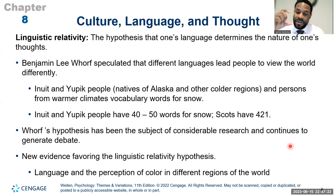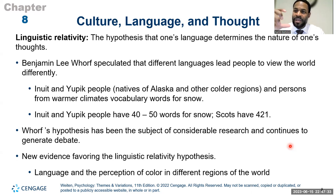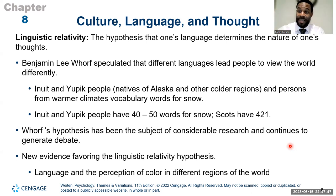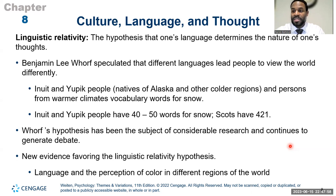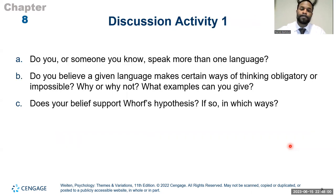Researchers continue looking for consistent findings on linguistic relativity. For instance, the perception of color varies across cultures — some languages have more vocabulary words for different shades of blue, while in English we broadly say light blue or dark blue. How limited or expansive our color vocabulary is may differ based on our language, further supporting the idea that language can shape perception.